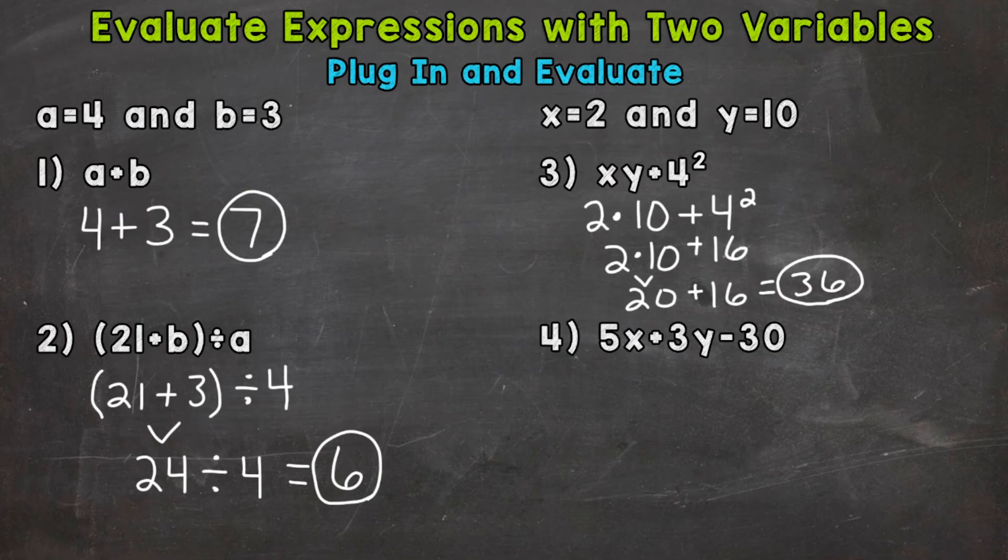And lastly, number 4, we have 5x plus 3y minus 30. Now remember, whenever you have a number next to a letter or a letter next to a letter, that means multiply. So plug in 5 times 2 plus 3 times 10 minus 30. So we plugged in. Now we are ready to evaluate.